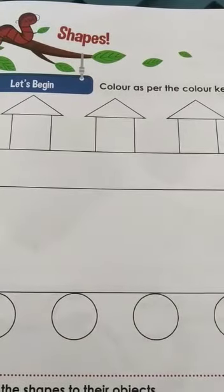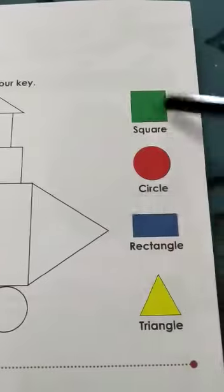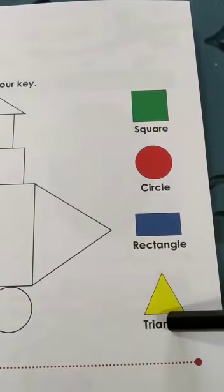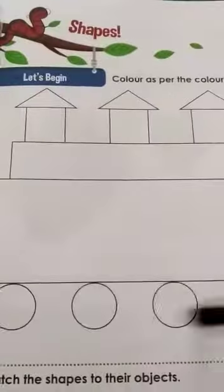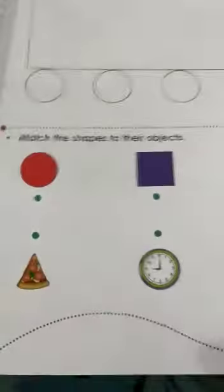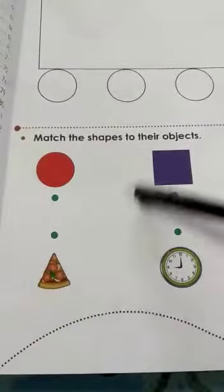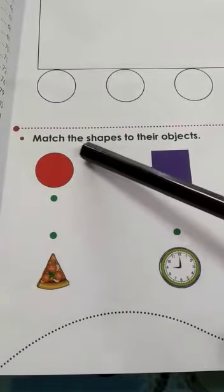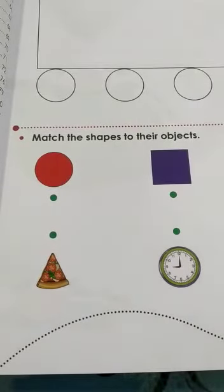So if you color all these things according to the color key given, you will get a colorful engine picture. Now let's go down. What is written here? They have given: 'Match the shapes to their objects.'